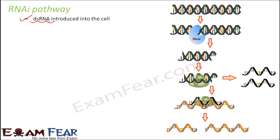There are many different ways dsRNA can be introduced into the cell — either by injecting it from outside, by purposefully injecting the dsRNA into the cell, or it can be produced by the cell itself. Double-stranded RNA can also be formed inside the cell itself. Depending on whether it is created within the cell or supplied from outside, the process of RNA interference pathway can start.